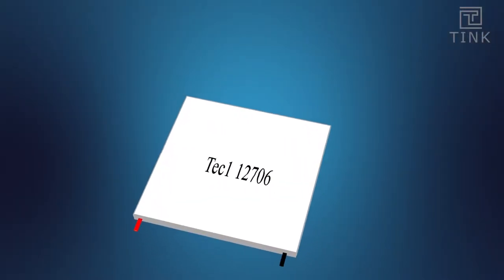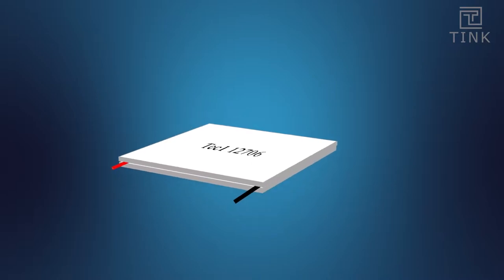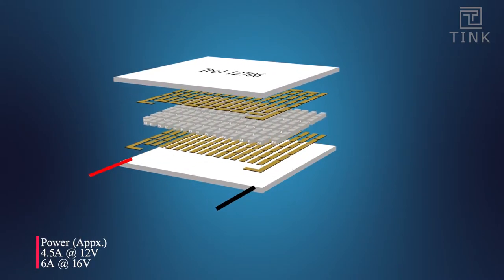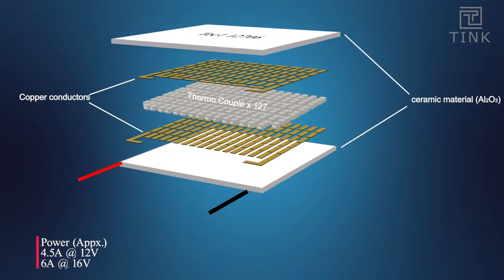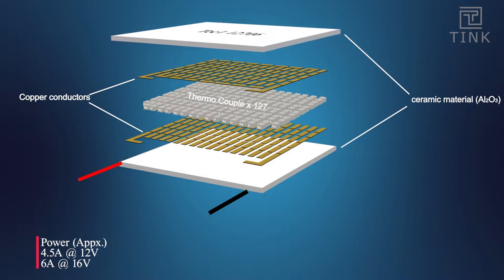Let's take a detailed look at how it works. The white sheets on the top and bottom are usually a ceramic substrate made up of aluminium oxide or beryllium oxide. These ceramic materials have high tolerance towards heat and cold and they are also good insulators.